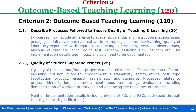Sub-criterion 2.2: Quality of student capstone project — weightage 25. The quality of the capstone or major project is measured in terms of consideration to factors including environment, sustainability, safety, ethics, and cost of the project. The type of project — whether application-oriented, product-based, research-based, or review-based — and its standards are also assessed. Process related to project identification, allotment, continuous monitoring, and evaluation, including demonstration of working prototypes, is considered. Implementation details including POs and PSOs addressed through projects with justification must be mentioned.